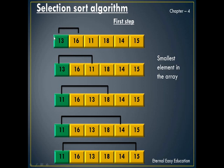In the first step, take 13 — the first element at index zero — and compare it with 16, the next element. Since 16 is greater than 13, no swapping occurs. The first element continues to be compared with the next element. Can you see this arrow? Now 13 is compared with 11.